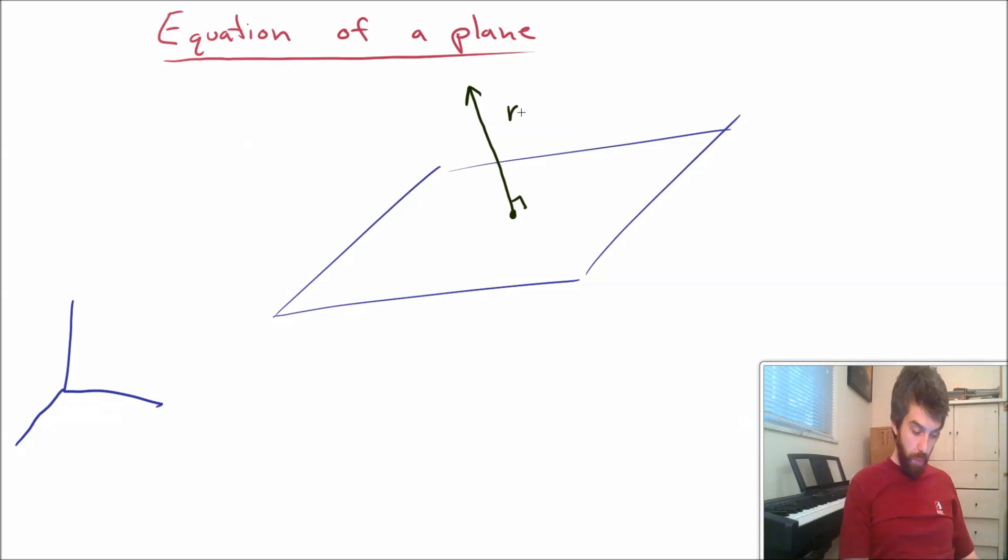So I'm going to give this normal vector, I'm going to give it the coordinates A, B, and C. I'm also going to label the base point for my normal vector. I'm going to label this point that we have right here. I'm going to call it the point X0, Y0, and Z0.